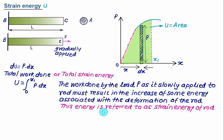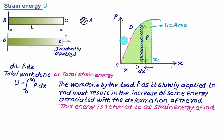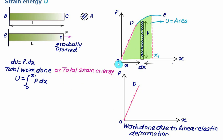For an axially loaded member, the total strain energy is calculated as the integral from 0 to x₁ of P dx. From O to D in the diagram there is a linear variation of force with respect to x, so we can calculate the strain energy up to the elastic limit. We divide this diagram into two parts: OD representing linear elastic deformation, and D to E representing non-linear elastic deformation.